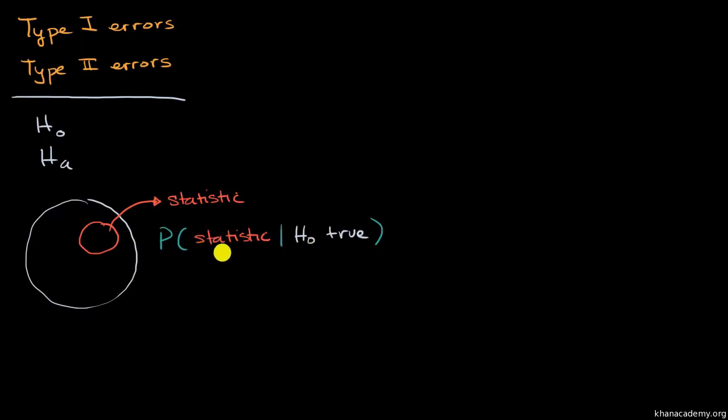And if this probability, which is often known as a p-value, is below some threshold that we set ahead of time, which is known as the significance level, then we reject the null hypothesis. Let me write this down. So this right over here, this is our p-value.